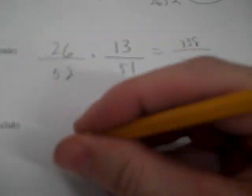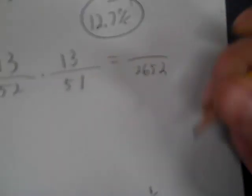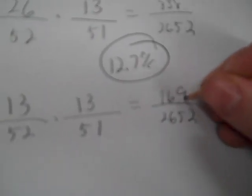A heart and a club. So hearts. There's 13 hearts. So I draw a heart. Let's pick the jack of hearts. And then a club. Well, there's 13 of those still. So 2652. 13 times 13 is 169. 6.4%.